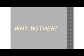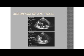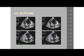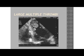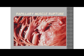Why bother treating patients with acute coronary syndromes? If we don't treat, what can result is aneurysm of the anterior wall of the left ventricle. We can get IVS rupture resulting in a VSD. We can have large multiple thrombi in the left ventricle, which can give rise to stroke. And we can see papillary muscle rupture, which if it's in the left ventricle, is going to result in acute mitral regurgitation.